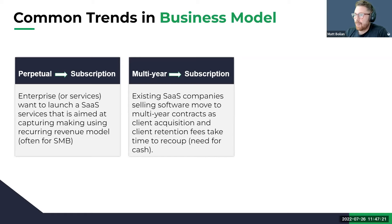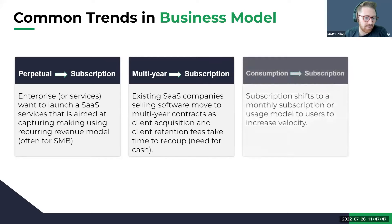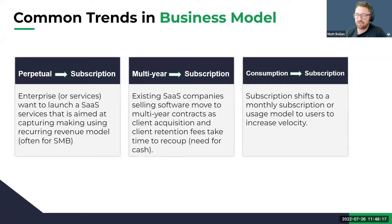Subscription base is actually moving toward multi-year because companies need cash. Then you have consumption going to subscription because PLG is so difficult to do — it is the most difficult RevOps shop to get right. You must have a totally frictionless sale process. You'll see PLG moving from user seats to attempting to do monthly subscriptions going the other way, because it's less friction and they're attempting to get larger and larger deals. These are the common trends you see through these business models.